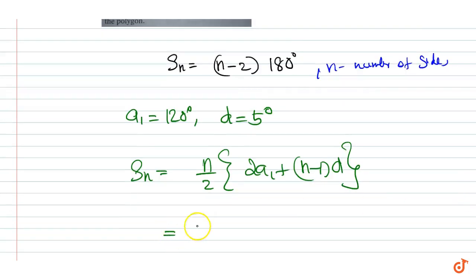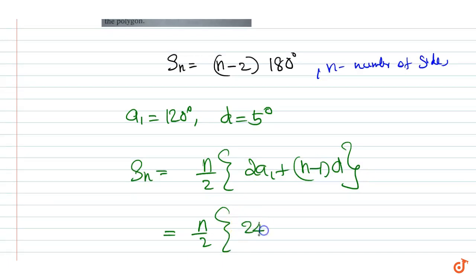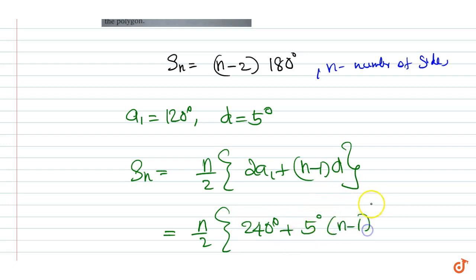This is equal to n/2 into (2·a1), where a1 is equal to 120 degrees, so 2·a1 is 240 degrees, plus d equal to 5 degrees into (n-1). It is given that this is equal to (n-2) into 180 degrees.